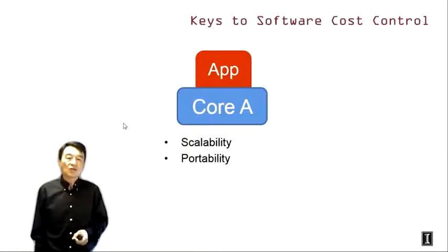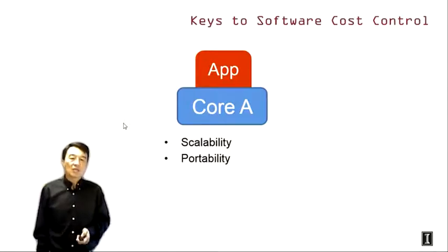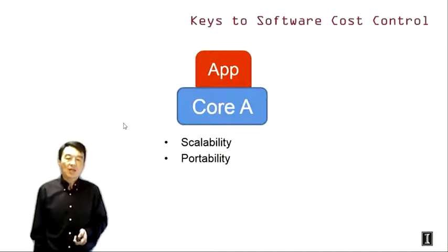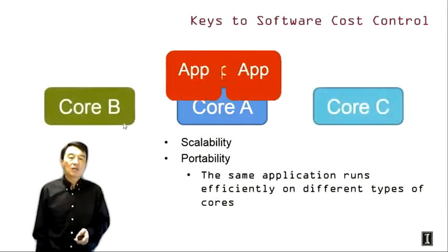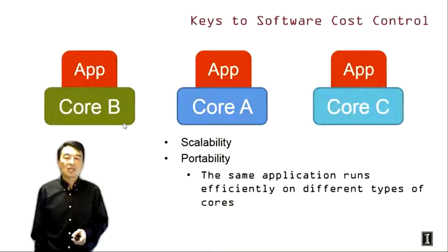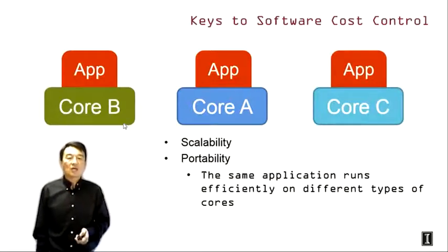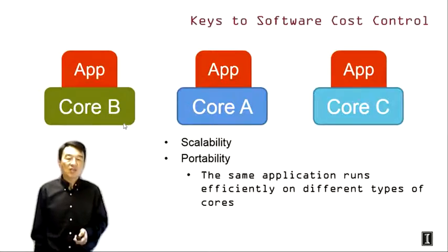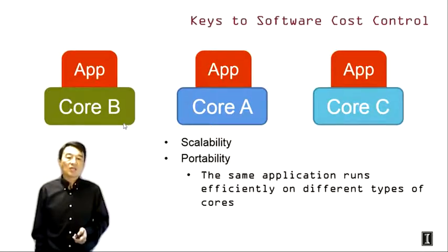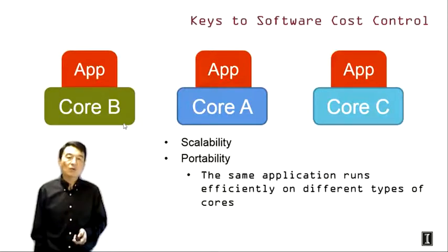The second dimension of software cost control is portability. Portability means that if we develop an application to run well on core A, we'd also like it to run well on different types of cores — core B and core C. If the application is portable, users can run it on different hardware types from different vendors without the developer needing to redevelop or revise the application.